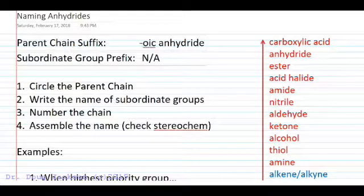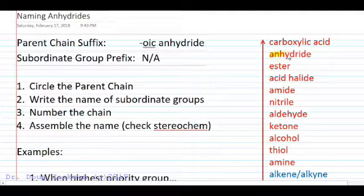Let's talk about naming anhydride. So an anhydride is a priority group on our chart here. It is the second highest priority group.